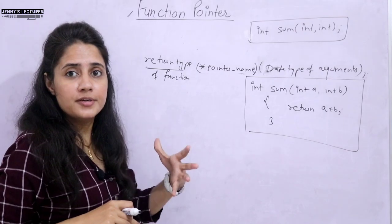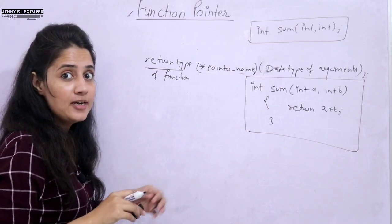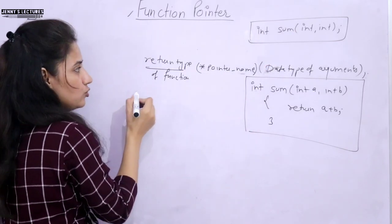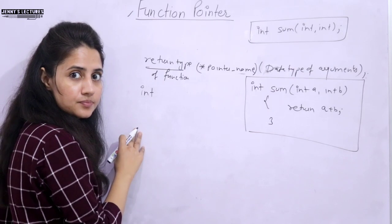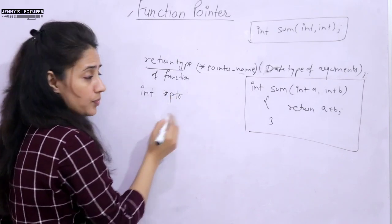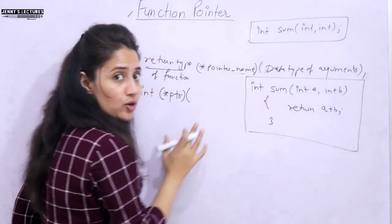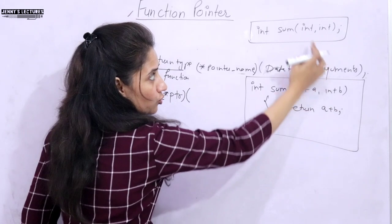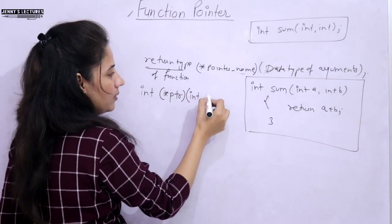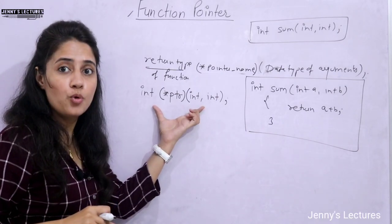Now I want a pointer which points to this function. How to declare that pointer? It depends on the prototype of the function. The return type of this function is int, so first you write int. Then asterisk pointer name — I'm taking PTR — put it in brackets, and here write the data types of the arguments. How many arguments? Two, and both are int. So here you write int, int. This is the declaration of a pointer pointing to this function.